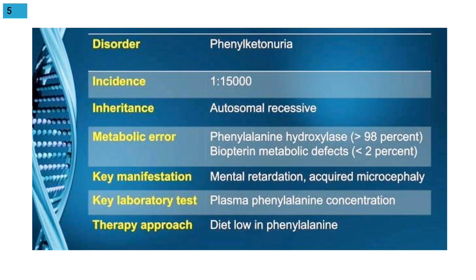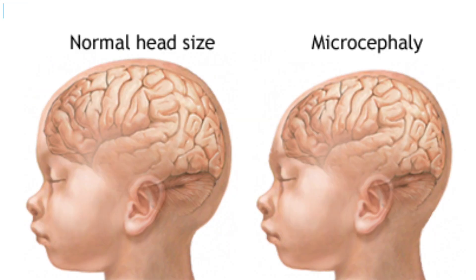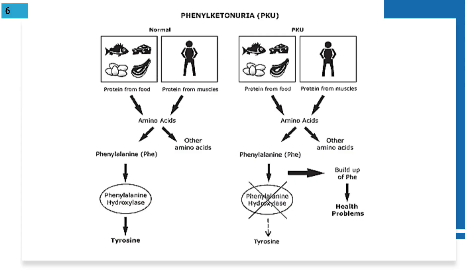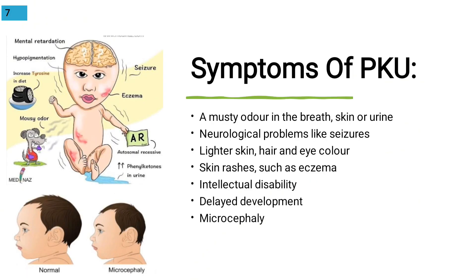When phenylalanine hydroxylase is deficient — less than 1-2% of normal activity — phenylalanine cannot be converted, leading to mental retardation, acquired microcephaly. We test plasma phenylalanine concentration. In therapy, we restrict phenylalanine intake. The symptoms of PKU must be detected early.